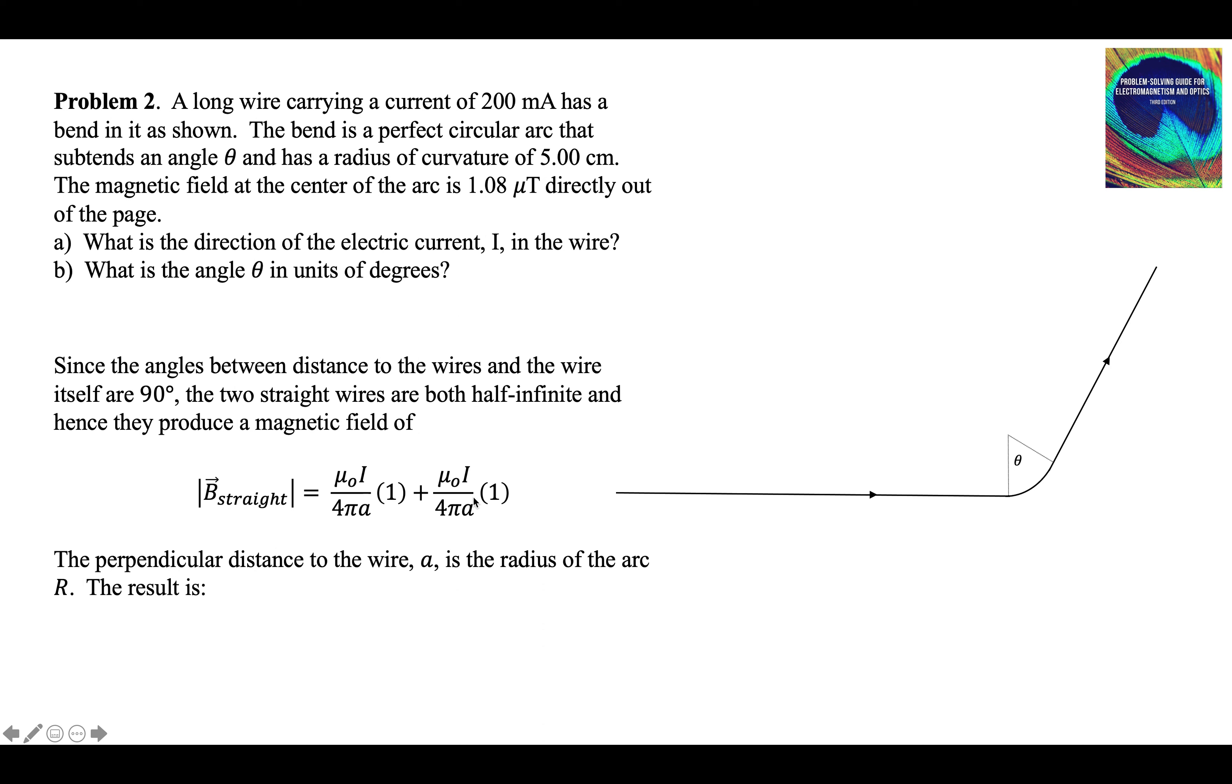And the perpendicular distance A is the same as the radius of the arc, five centimeters. So there's two of them, and we calculate that the field contribution from the two half-infinite wires is 0.8 microtesla.